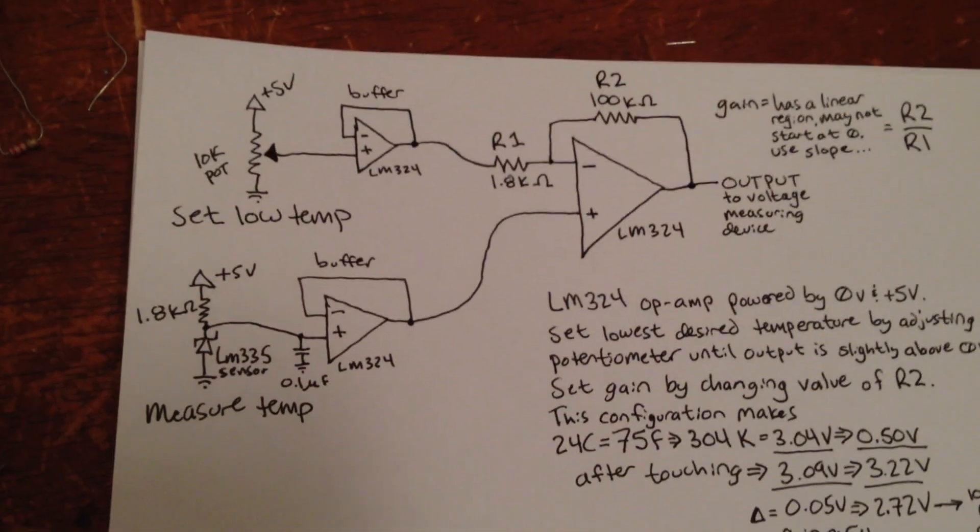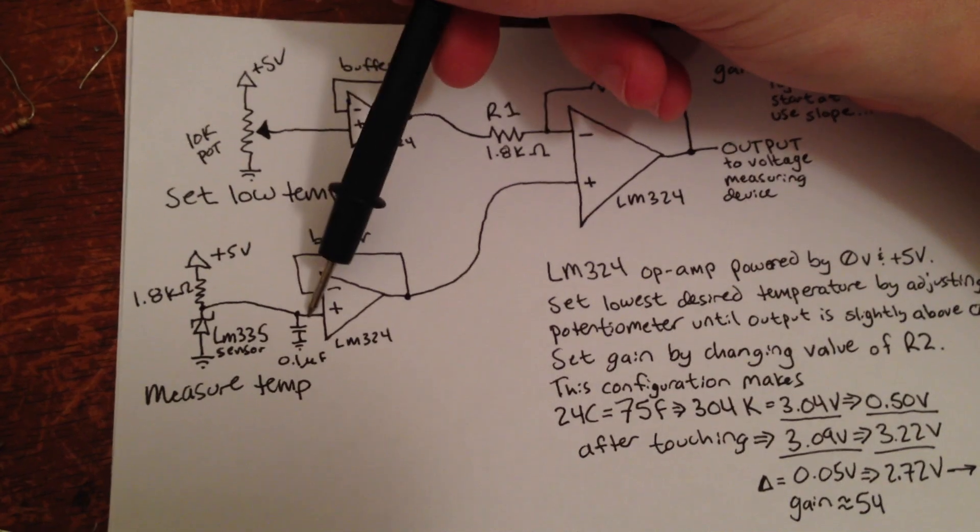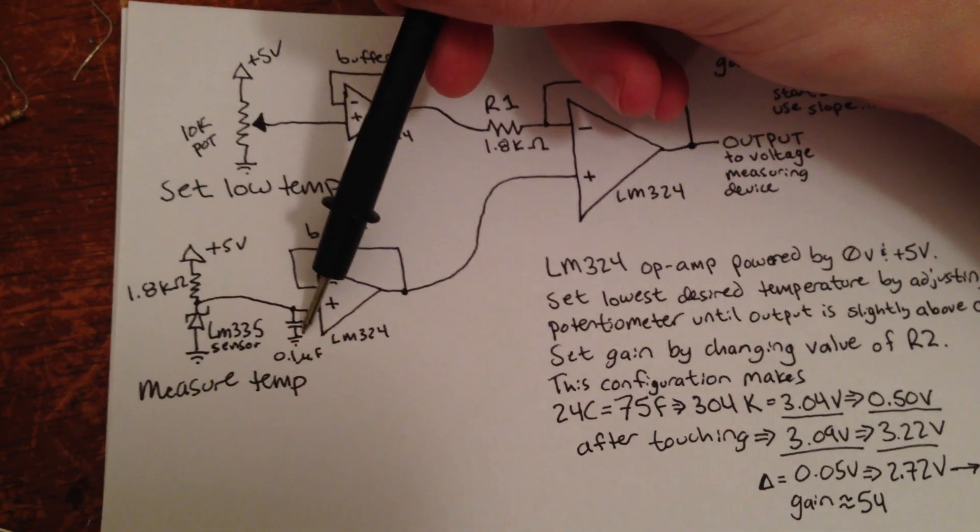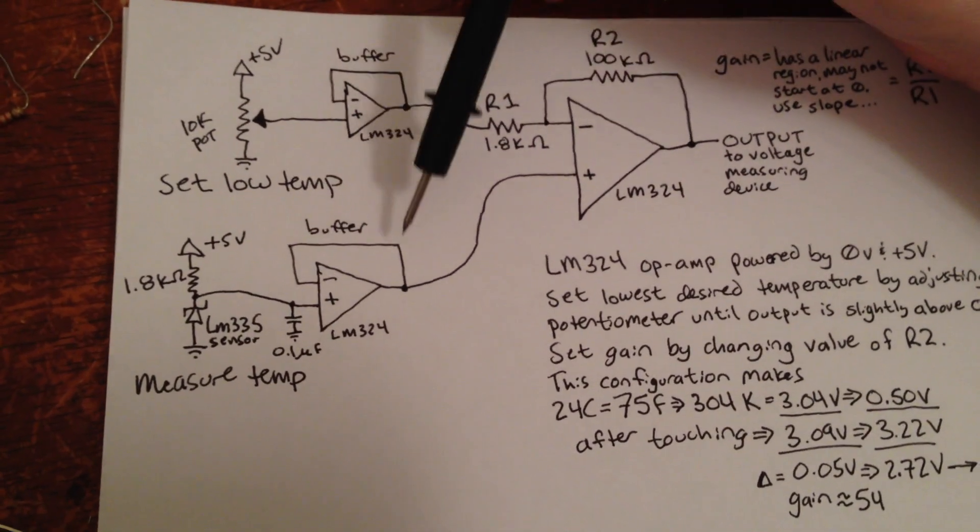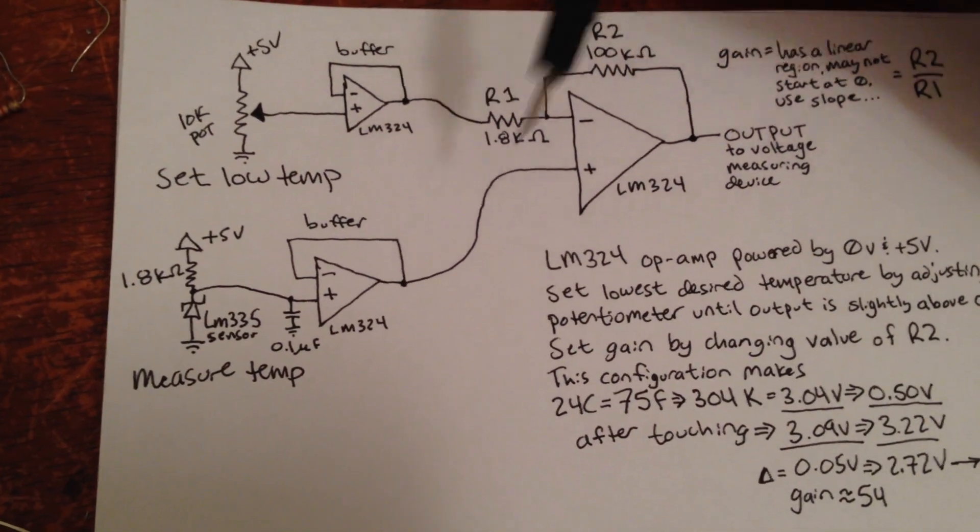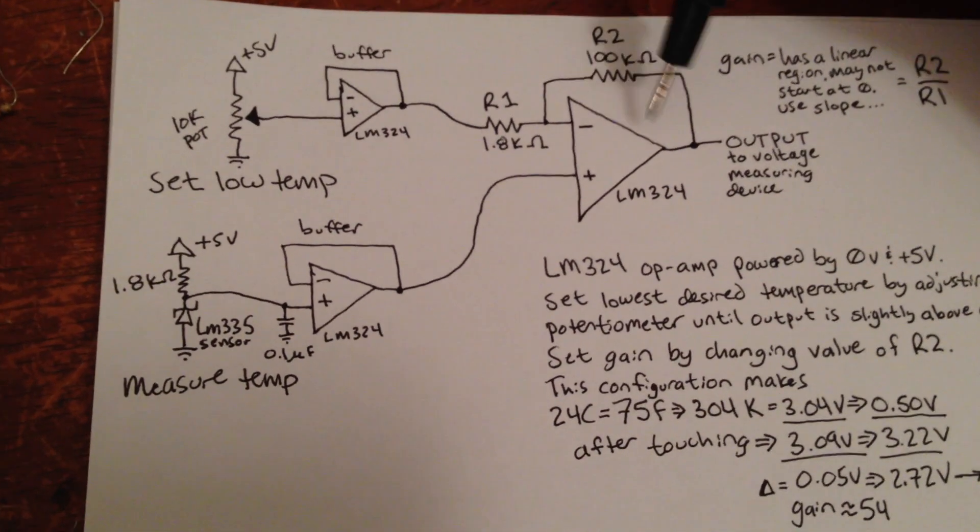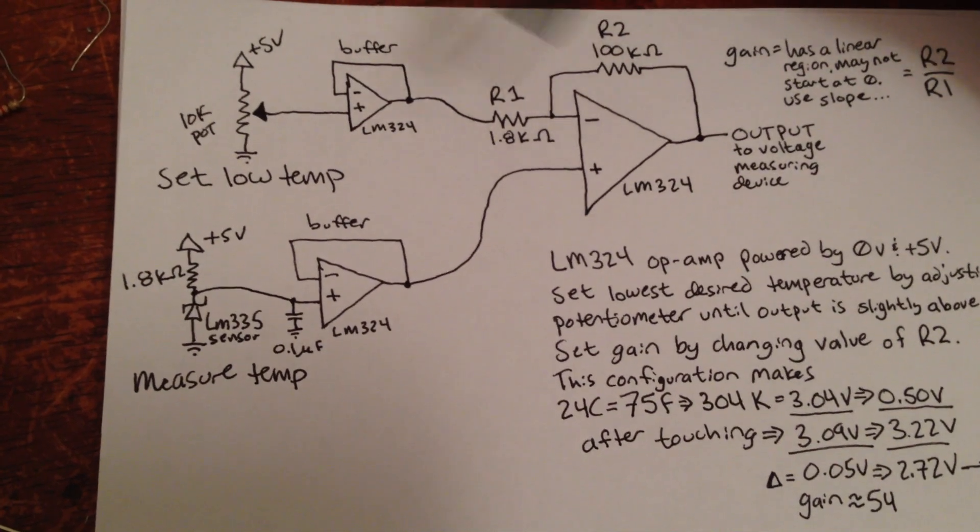We already talked about how the voltage sensor works here, the LM335. It uses a decoupling capacitor here just to eliminate some of the 60 Hz noise. And then it goes through one stage of an LM324 operational amplifier. This is not using a negative supply voltage, which is nice and convenient. I made this work for a normal power supply of 0 to 5 volts.